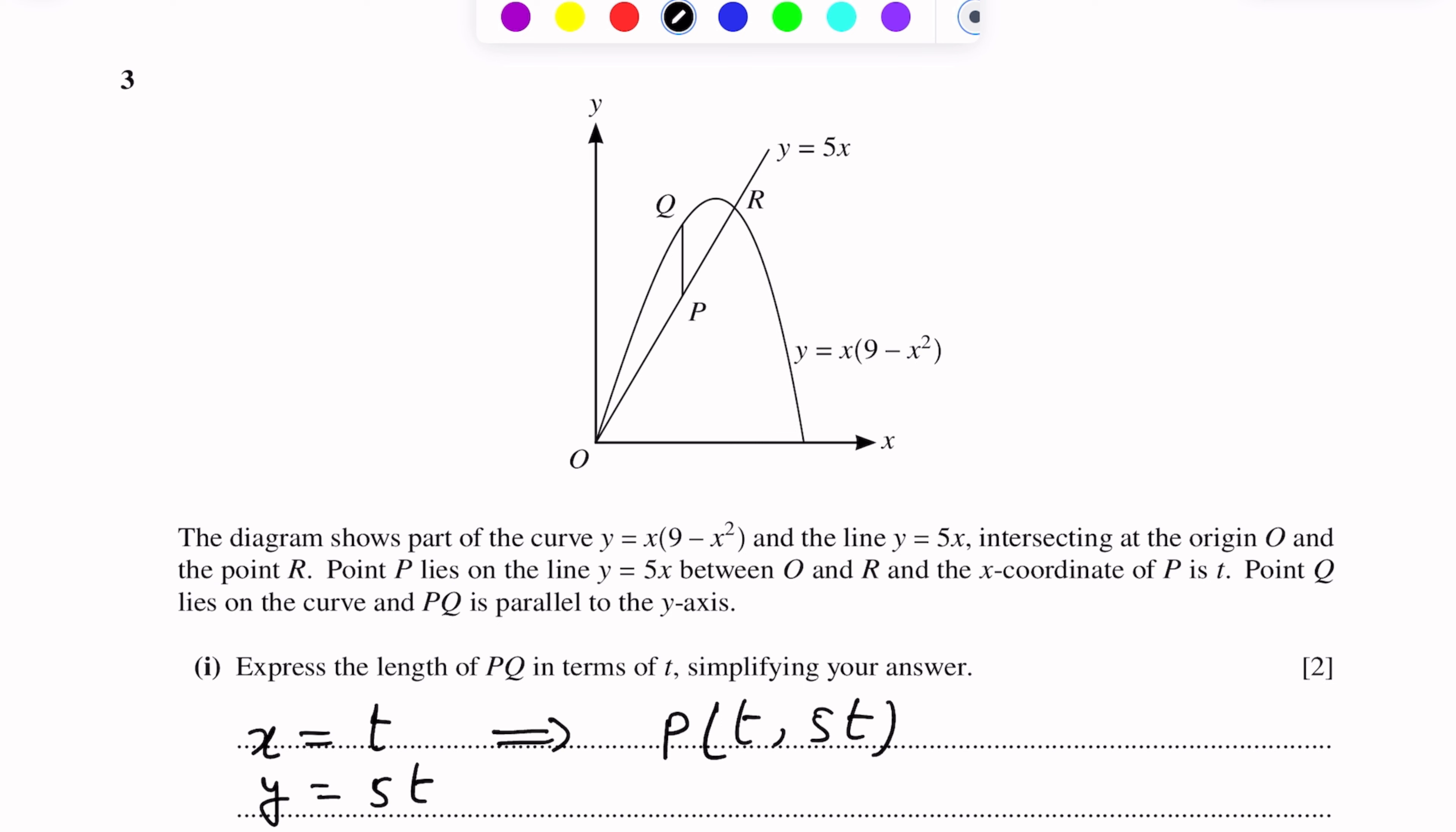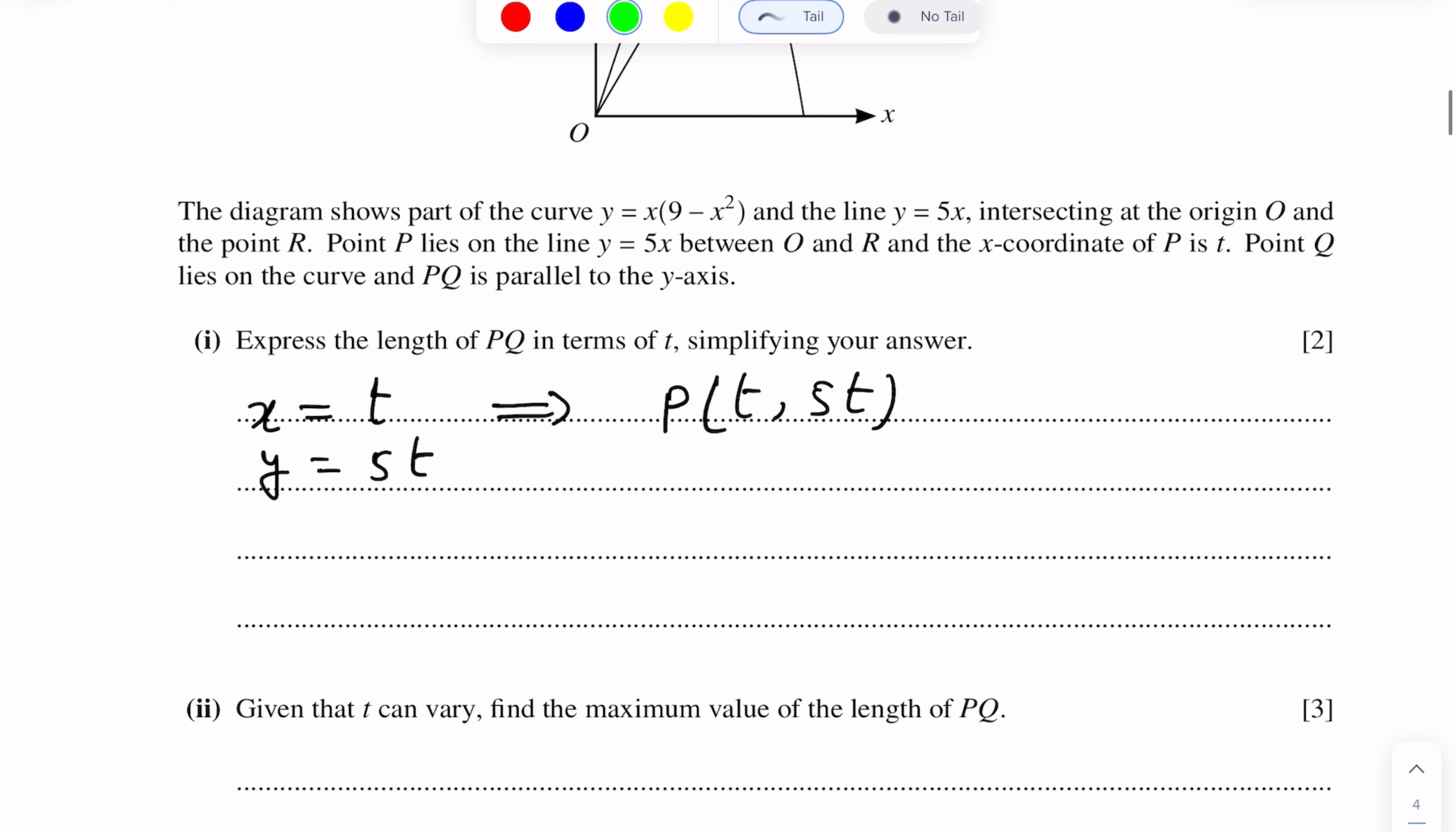Similarly, the curve equation is y equals x into 9 minus x squared. Since Q point lies on the curve, for Q point the x-coordinate is t. In place of x we will put t and the y-coordinate of Q will come. We put t in the curve equation, so we get t into 9 minus t squared. This becomes y equals 9t minus t cubed.